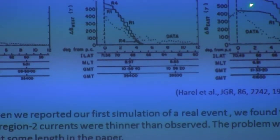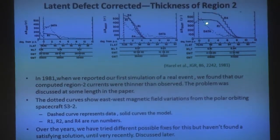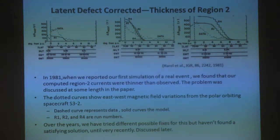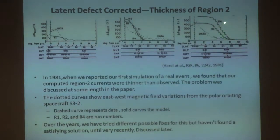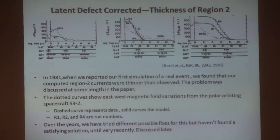One thing we hoped this would do was allow us to correctly predict the thickness of the Region 2 current. Well, it didn't. These are slides from our first simulation of an actual event with the Rice Convection Model, published in 1981. These are the east-west magnetic deflection we would expect on a polar orbiting spacecraft — the spacecraft was an old Air Force spacecraft called S3-2. The problem is that systematically we tended to get too small a latitudinal extent for the RCM Birkeland currents, and then a region poleward of the Region 2 currents with kind of no Birkeland current. You do see that sometimes, but it's not typical, whereas it was kind of all the time in the Rice Convection Model, and that was true for many, many years.